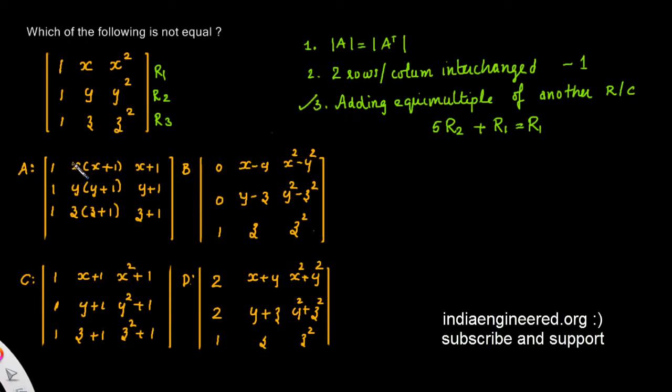Let's see option B first. In option B we have R1 is R1 minus R2, and R2 is R2 minus R3. These are valid operations. We are subtracting or adding two rows which is valid. So option B is equal to this given determinant.